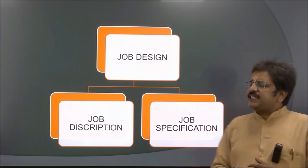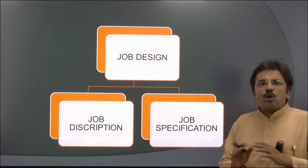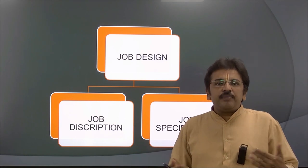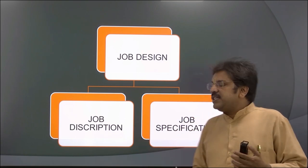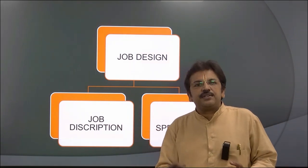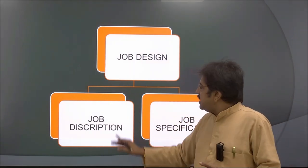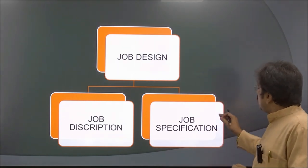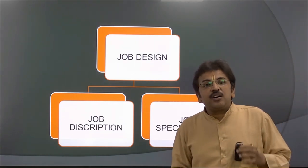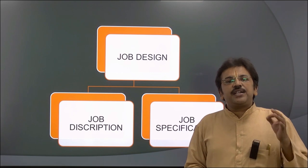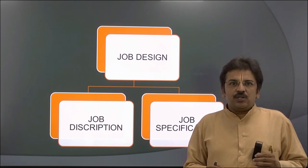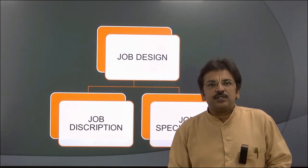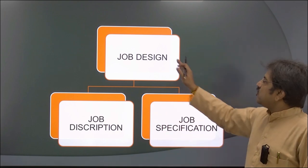Job description tells about the job — how it is going to be done, what is done, where it is done, what qualifications are required, and what salary is offered. Job specification describes all the skills required and how the work is to be completed in process. So job description tells about the job, and job specification tells how the job is going to be done.